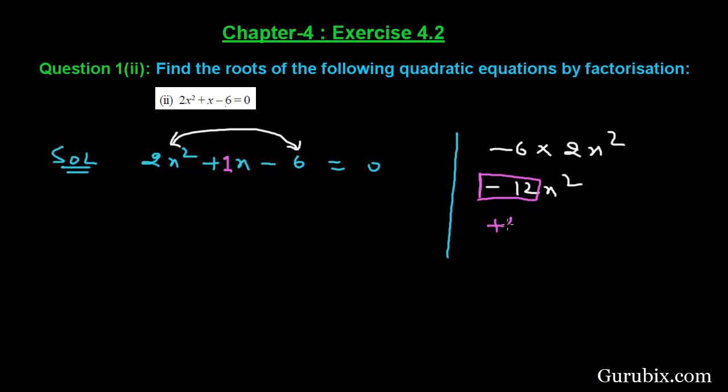Then we have easily found this is +4 and -3. If we add +4 and -3, then we have positive 1. If we multiply +4 with -3, then we have -12. So these are our two parts of -12.